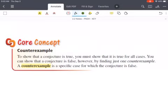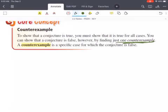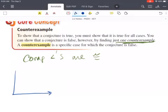To show that a conjecture is true, you must show that it is true for all cases. You can show that a conjecture is false, however, by finding just one counterexample. So this is where we're getting into proof writing. We have to prove something is true in all the cases. But in order to prove something is false, all you need is one counterexample. So if I were to make the statement that complementary angles are congruent, I could find an example where that is a true statement. If I make two angles, 45 and 45, they are complementary. Are they congruent? Yes.